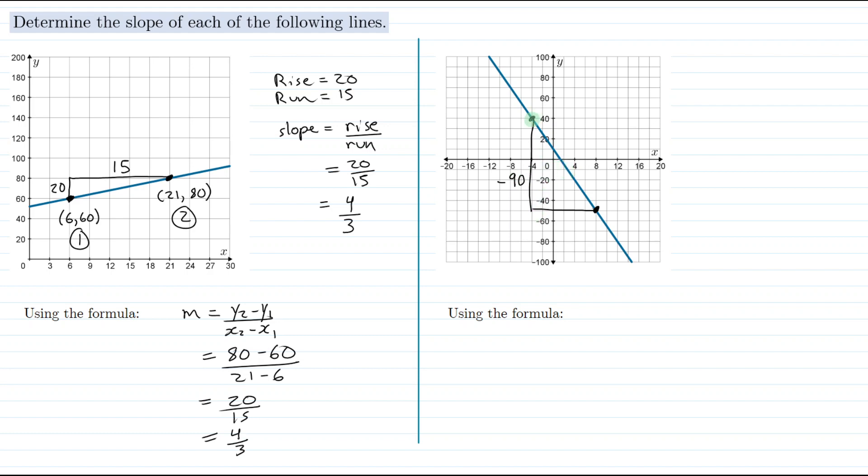And how much did we go over? Well, we started at an x value of negative 4 and went to an x value of 8. So to get from negative 4 to 8, you could count the squares, realizing that on the horizontal axis each square is 2 in this case. But we could also say that from negative 4 to 8 we had to increase by 12. So our rise is negative 90 and our run is 12.